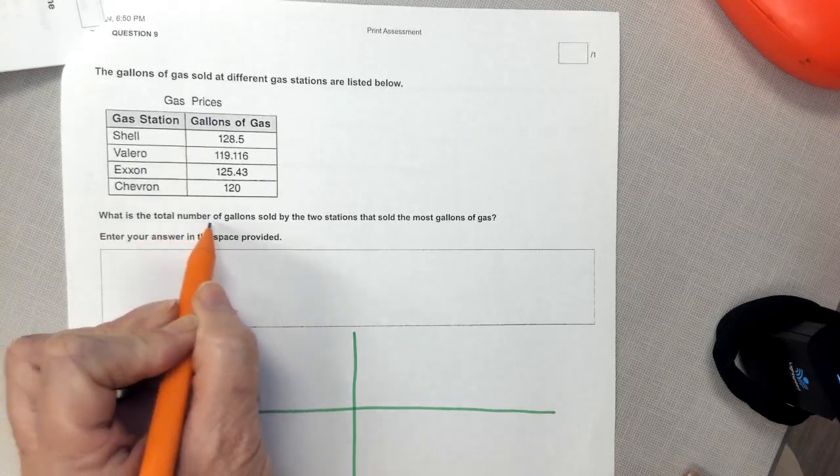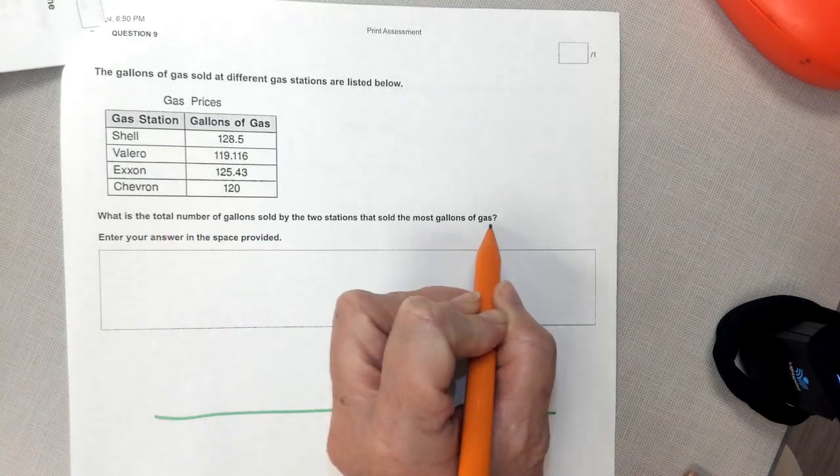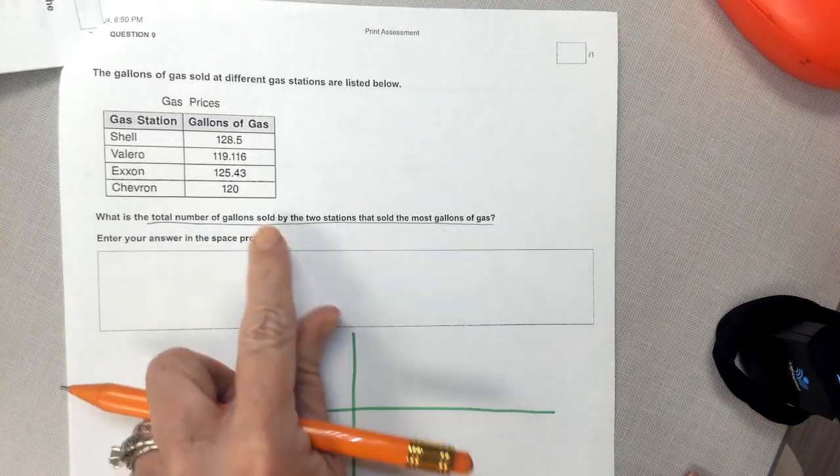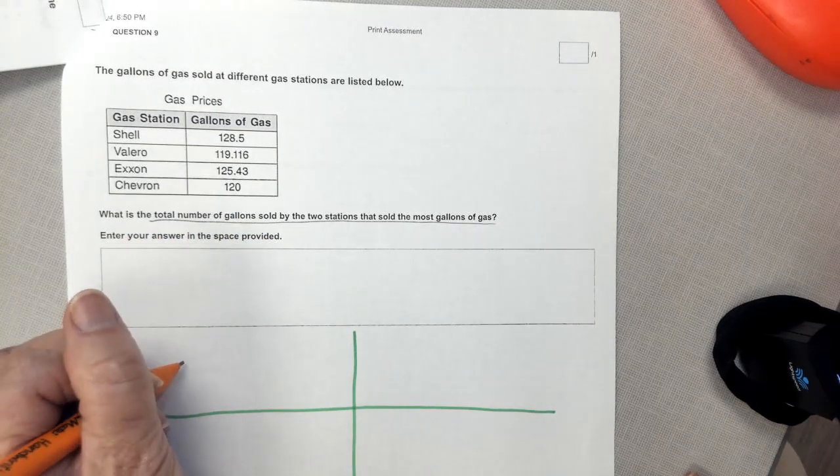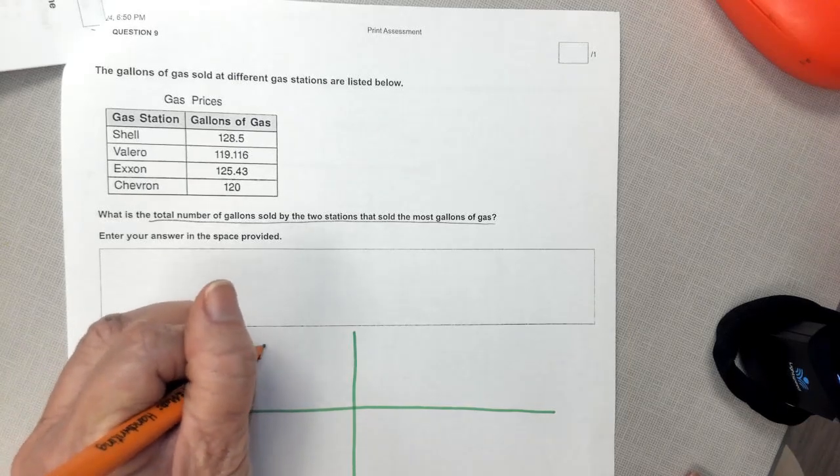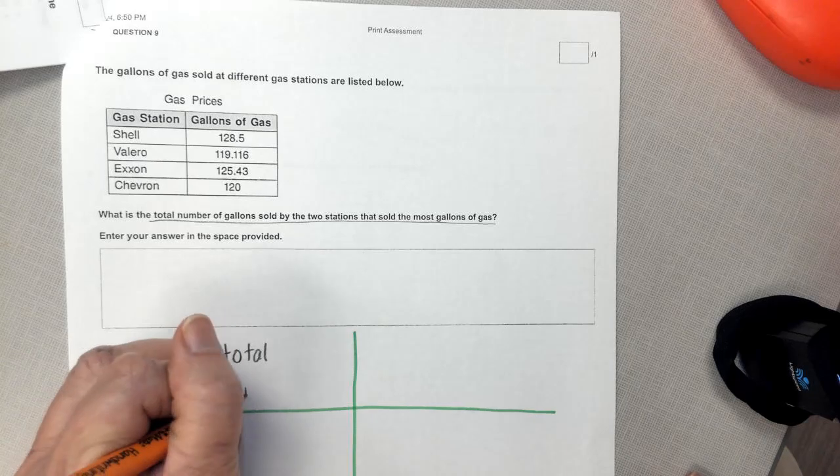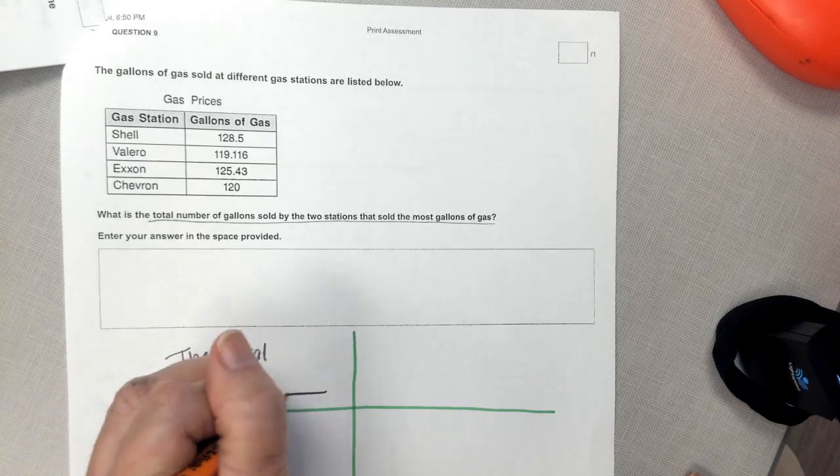So it says, what is the total number of gallons sold by the two gas stations that sold the most gallons? I'm going to underline that, and I'm going to answer that by saying, the total amount was blank gallons.